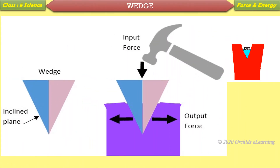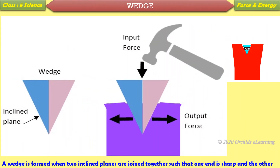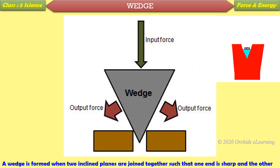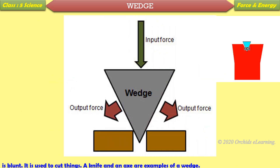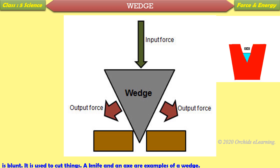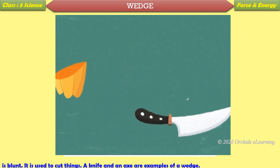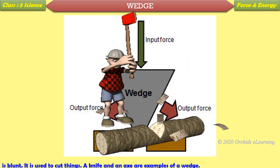Wedge: A wedge is formed when two inclined planes are joined together such that one end is sharp and the other is blunt. It is used to cut things. A knife and an axe are examples of a wedge.